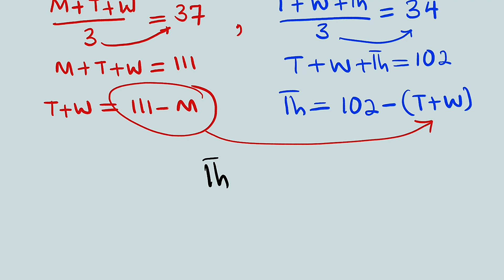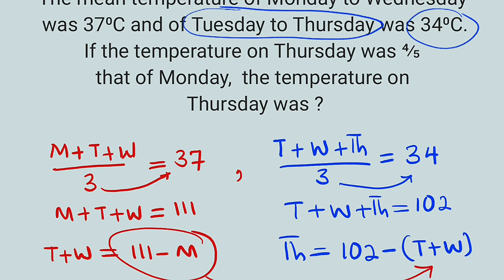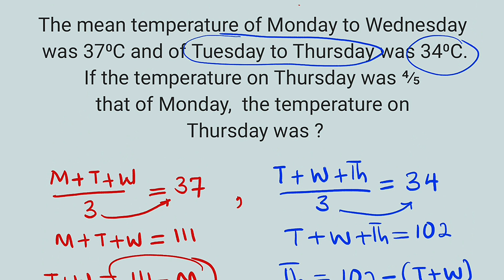So we can take 111 minus M and plug it here. Therefore, TH, which is Thursday, is equal to 102 minus T plus W, which is now 111 minus M. Okay, let's go back to the question. From the question, we have learned that Thursday was 4 over 5 that of Monday.